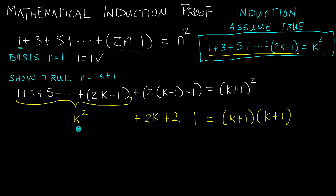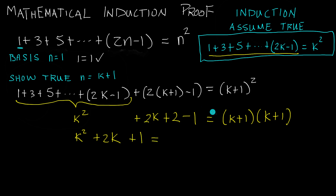Now we have k squared plus 2k, and 2 minus 1 is positive 1. So on the left hand side, we have k squared plus 2k plus 1. Is that equal to k plus 1 times k plus 1?